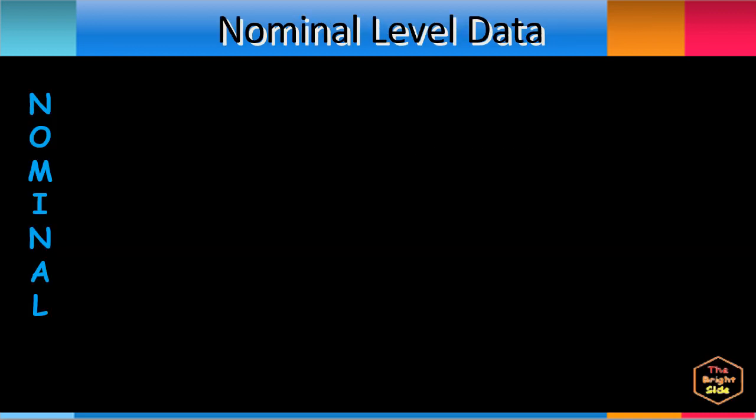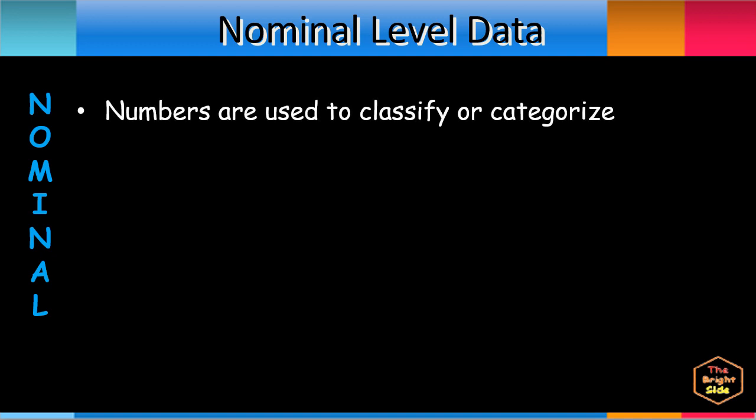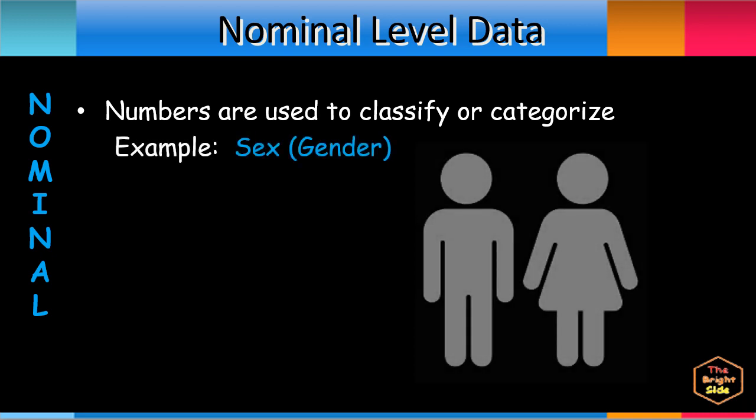Nominal level data numbers are used to classify or categorize. These qualitative data describe names or identify the elements of a population. The numbers or scores have no size or magnitude. An example is the data for the variable sex or gender. The number 0 may be assigned to the value male, while the number 1 for female. The numbers 0 and 1 do not represent any numerical value; they are used simply for classification.